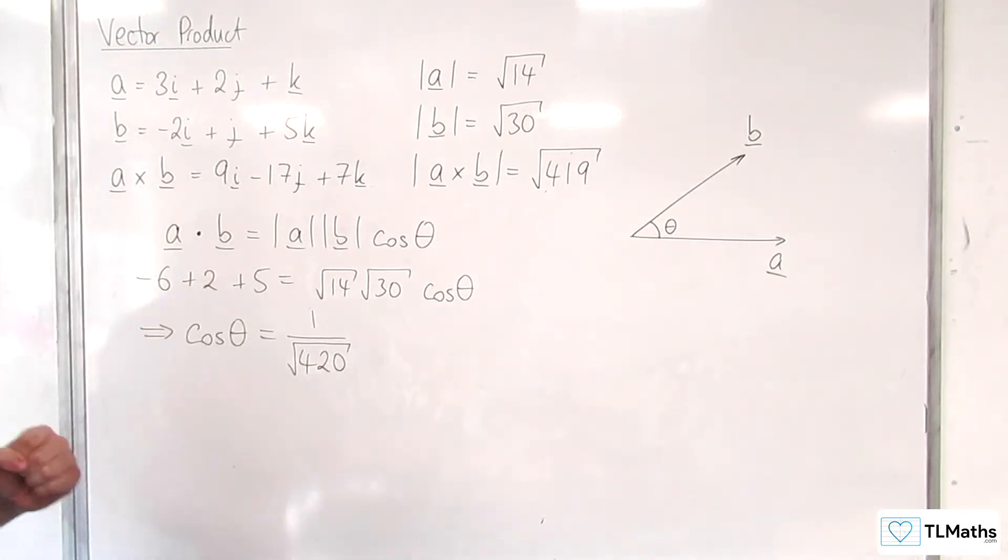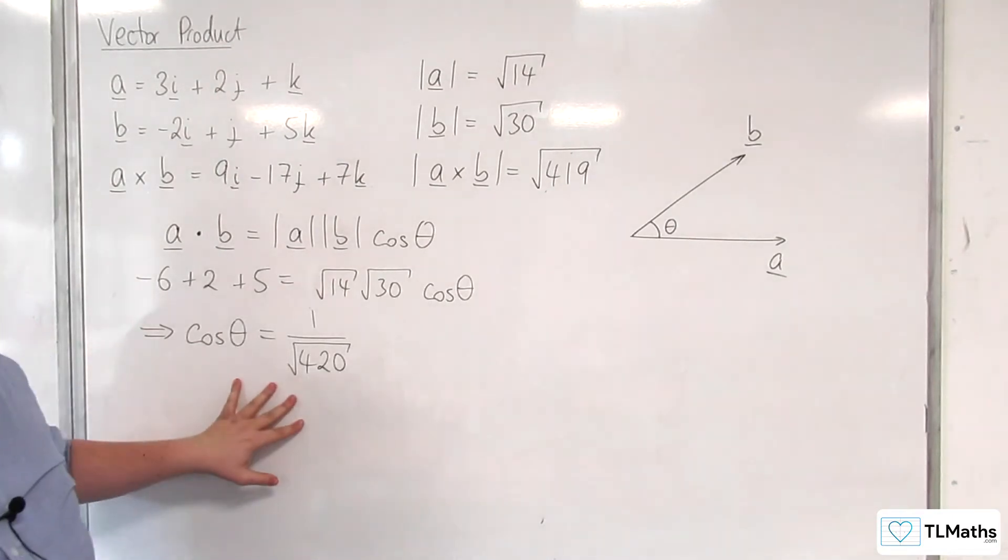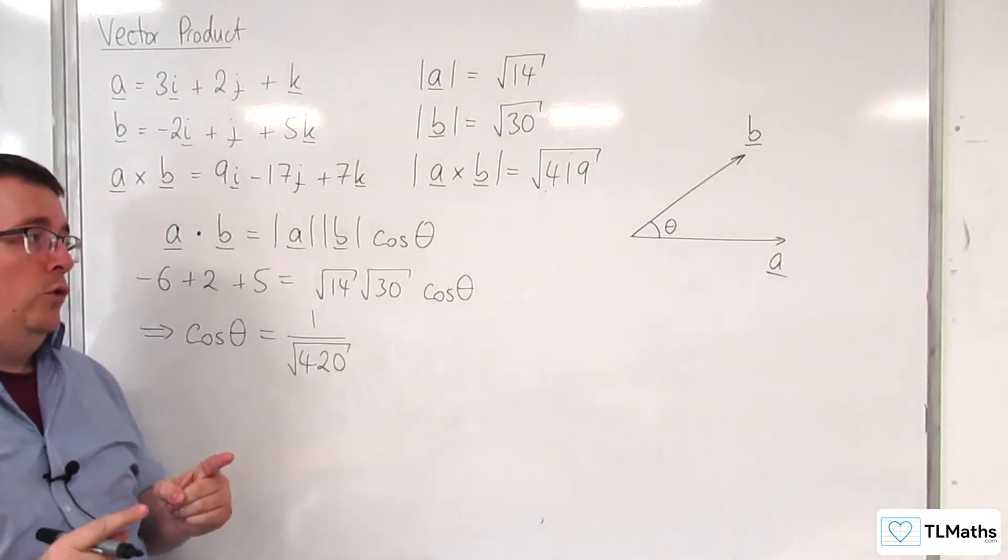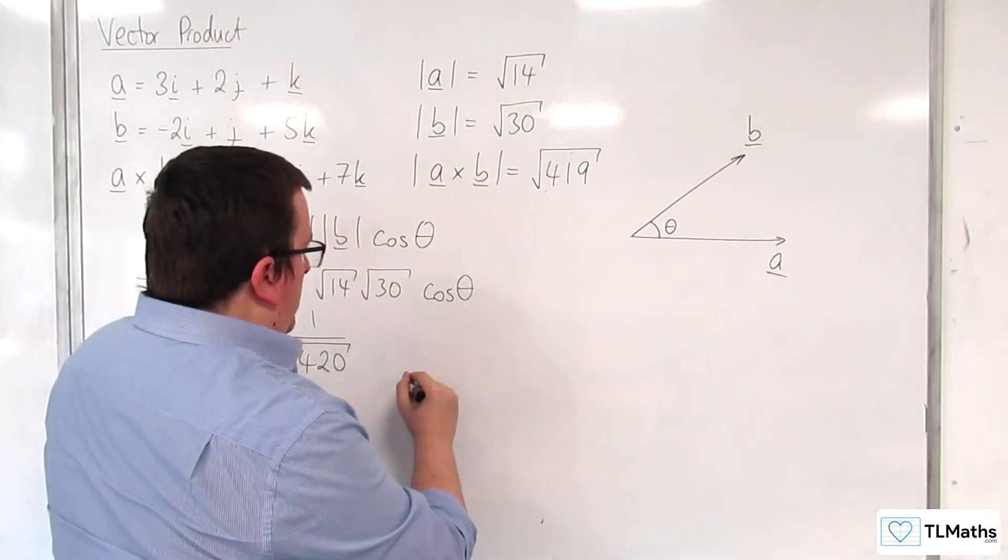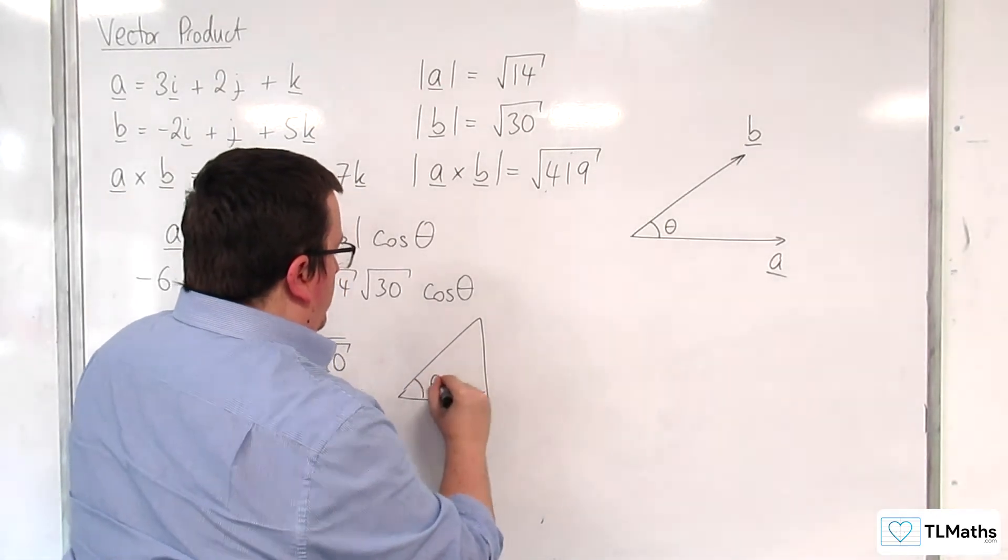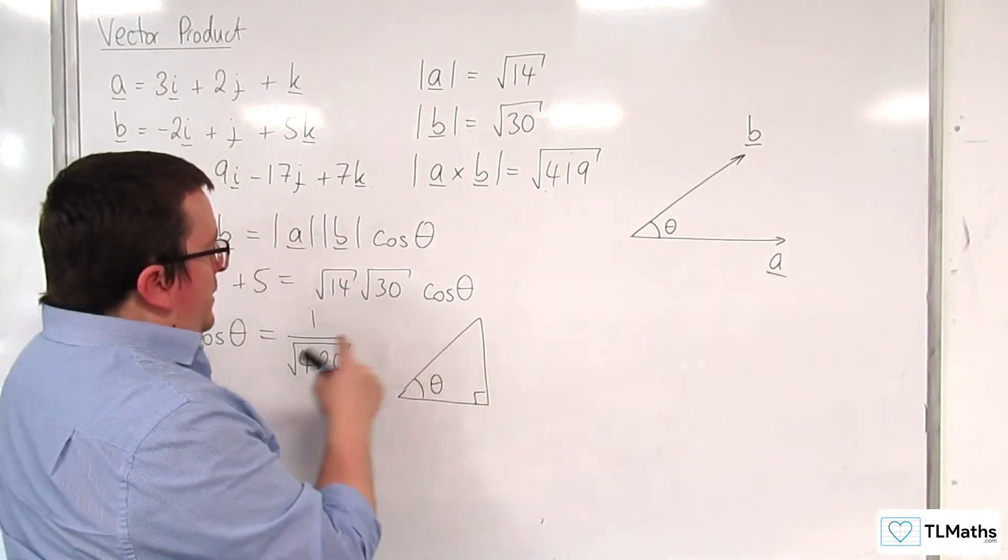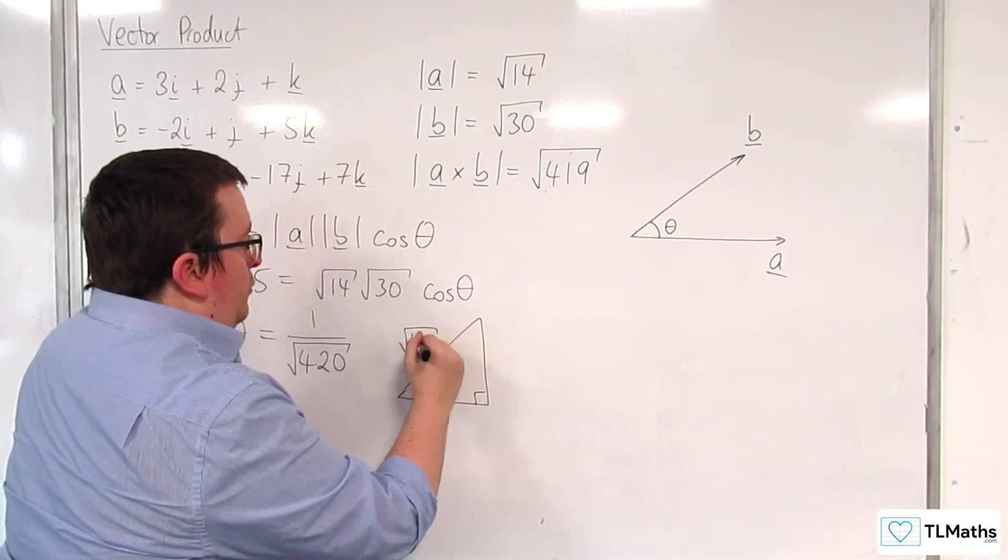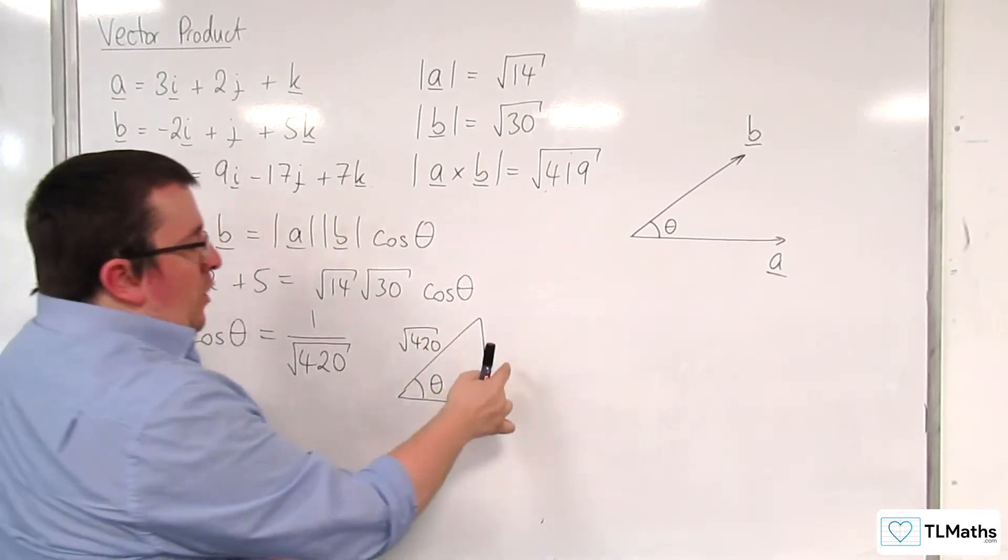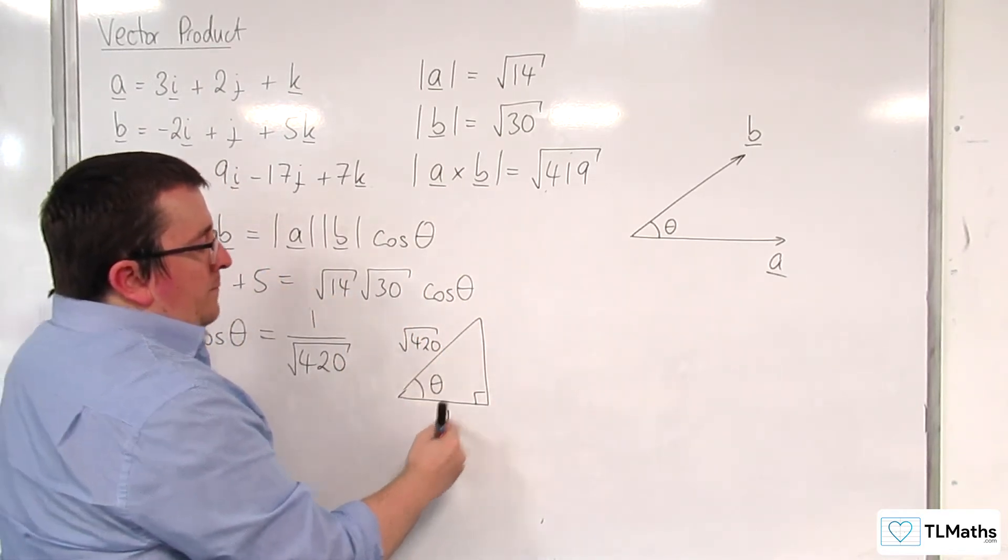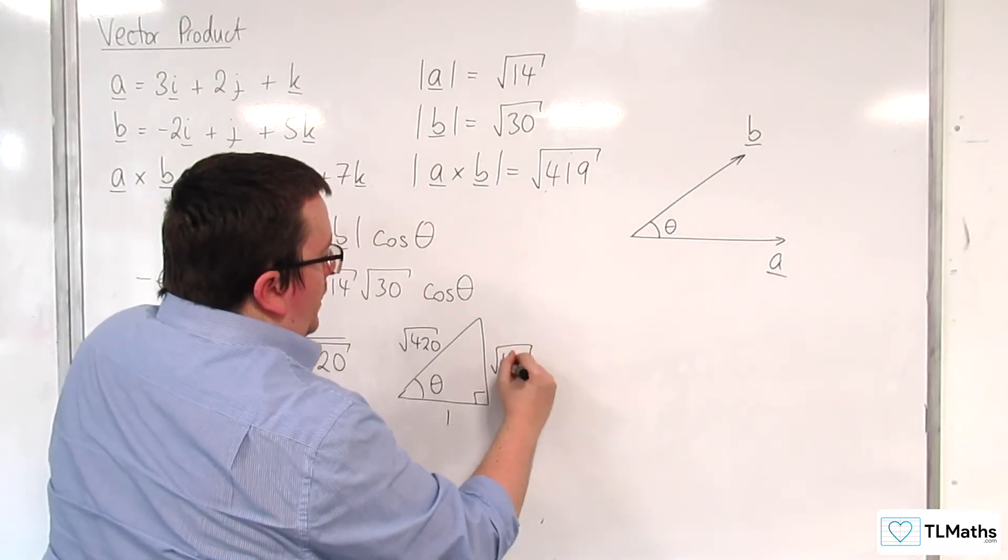So, what I could do is I could actually work out the sine of that angle theta. Now, assuming that theta is acute, I can do this. I can draw a right-angled triangle. Here's theta. And we've got the adjacent over the hypotenuse, so 1 over the square root of 420. And so, the opposite side would be the square root of 420, take away 1. So, this is the square root of 419.